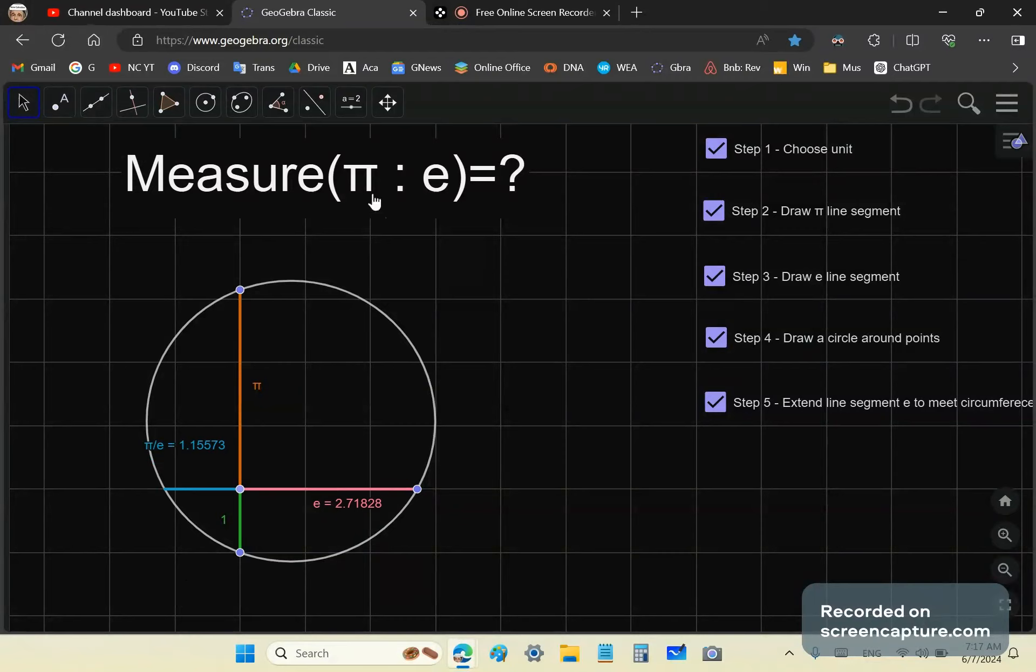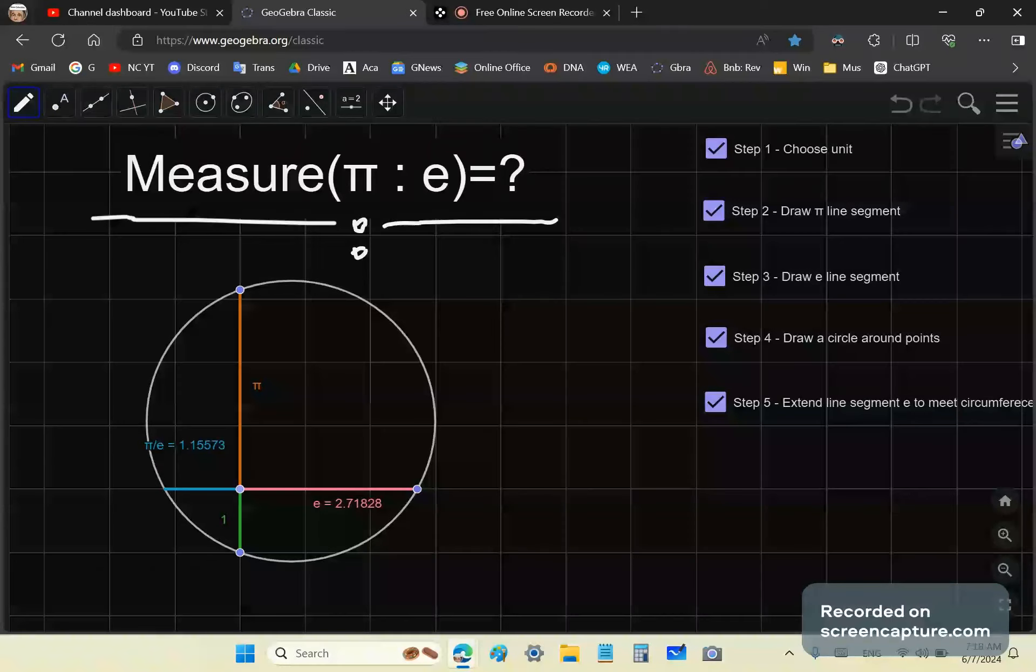Normally we wouldn't even write measure of pi e like this in geometry. We would just write this line here like that, and then e like this, and put the ratio thing in the middle. That's what we would do in geometry. We don't even talk about the algebraic measure because algebra uses the abstract unit.